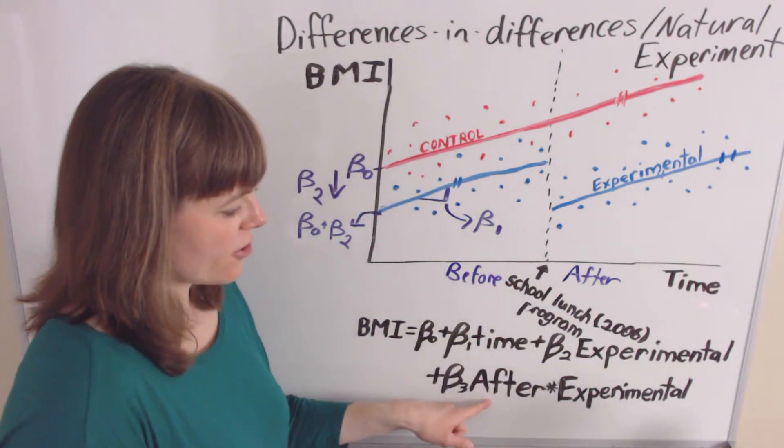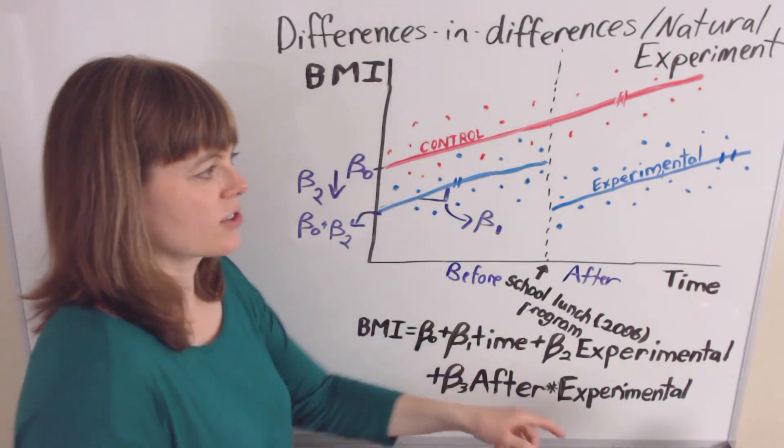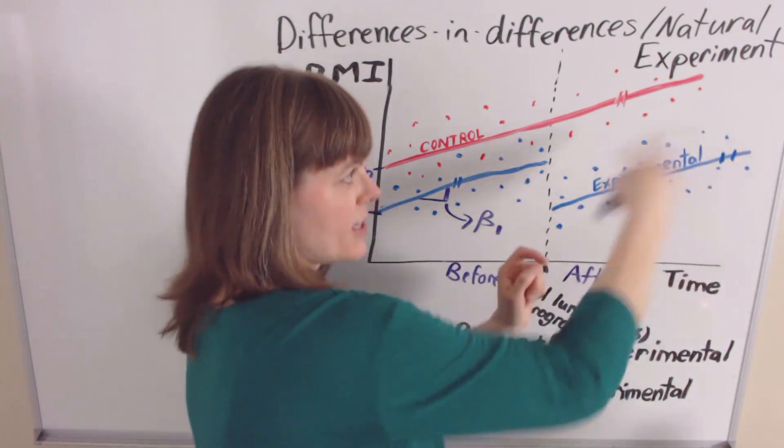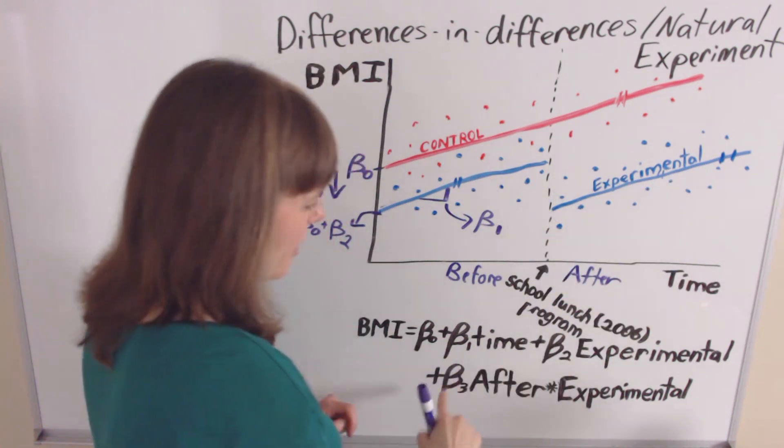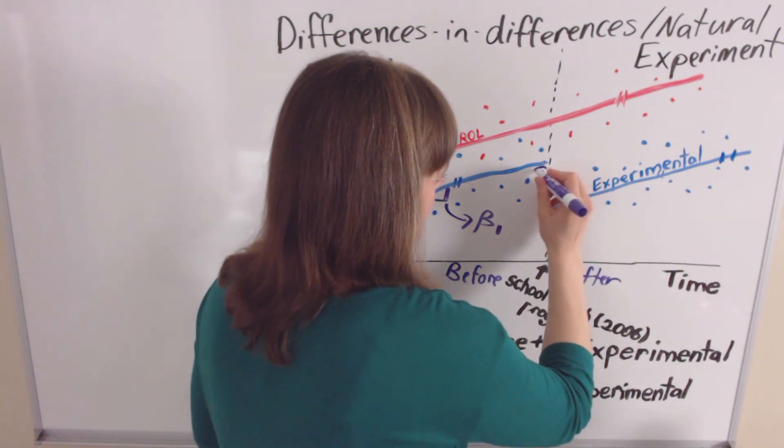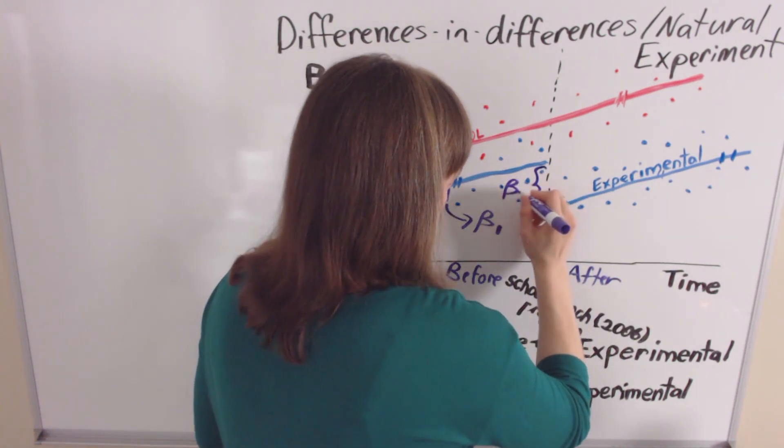And after times experimental. So we're only capturing this after effect for the particular experimental group. We're not capturing it for the control group. So beta 3 is going to represent this distance here. Beta 3.